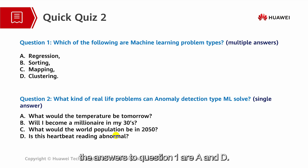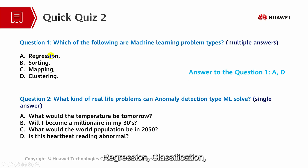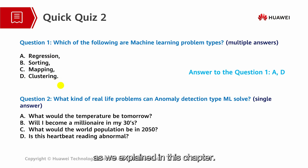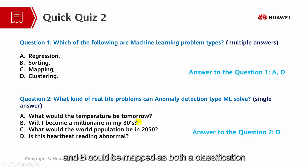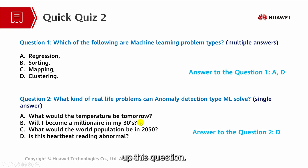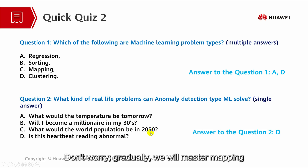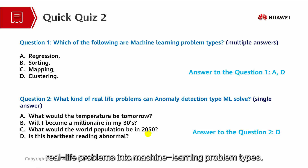The answer to question 1 is A and D. Regression, classification, and clustering are some of the main machine learning problem types, as we explained in this chapter. The answer to question 2 is D — anomaly means abnormality. A is a regression-type problem, and B could be mapped as both a classification or a regression-type problem depending on how we set up the question. C is again a regression-type problem. Gradually, we will master mapping real-life problems into machine learning problem types.